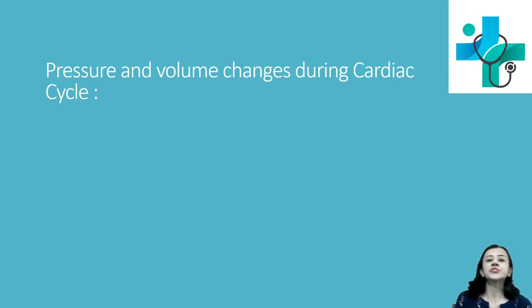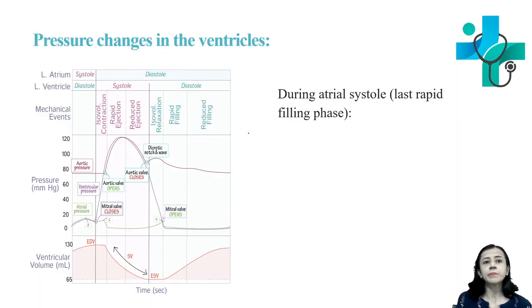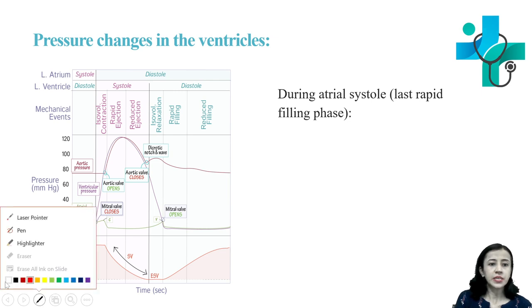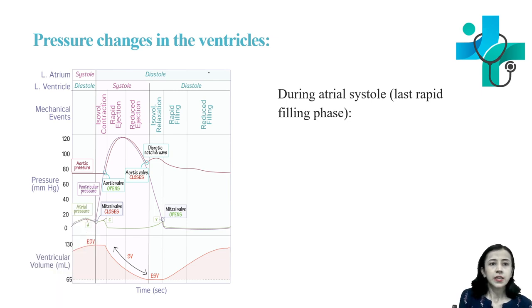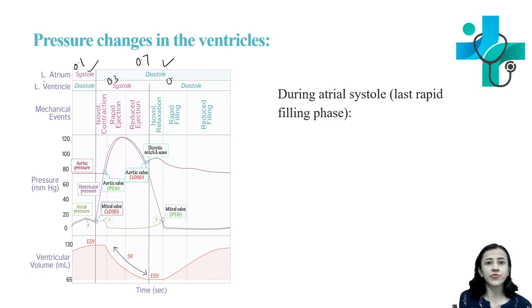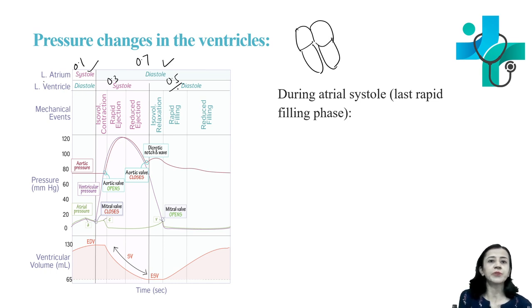Hello everyone. Today I will discuss pressure and volume changes during the cardiac cycle. Before starting, let us discuss the phases of the cardiac cycle. The cardiac cycle has systole and diastole: atrial systole is 0.1 second, atrial diastole is 0.7 second, ventricular systole is 0.3 seconds, and ventricular diastole is 0.5 second. We will now discuss the different phases of the cardiac cycle and pressure changes.